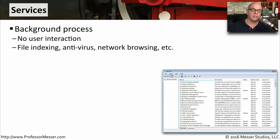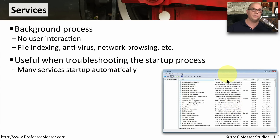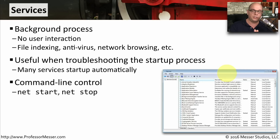A Windows service is an application that runs in the background. It doesn't have a user interface associated with it, and we usually don't interact directly with the service itself. This might be the file indexing service in Windows, or the antivirus process that's always running behind the scenes looking for viruses. You can find a list of all of these services in the Windows Services utility. This utility is very useful if you ever need to troubleshoot things during startup. You can disable and enable services to see if that solves problems you might be having. You can also start and stop services from the command line using the net start and net stop commands with the name of the service.